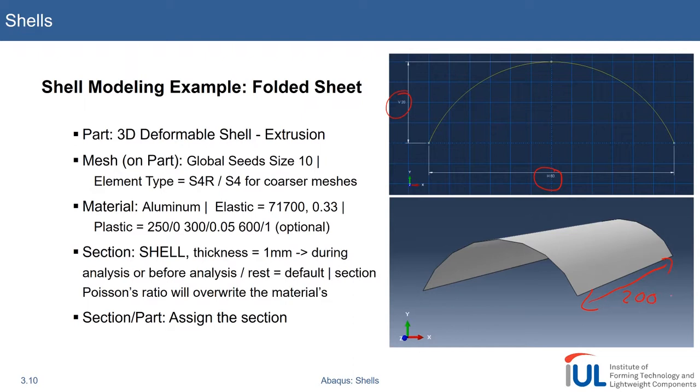We choose 3D deformable shell. This is important, so this will make it a 2D body in a 3D space. Other than if we go for a 3D deformable solid, if we use continuum shell elements, we will talk about this later. As a type, we use extrusion because we will model, as we see in the picture on top, the cross section and then just extrude it by 200.